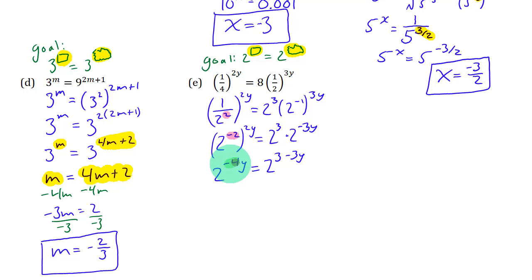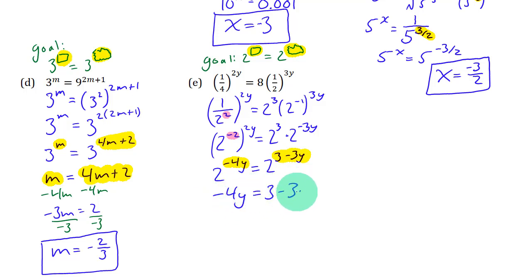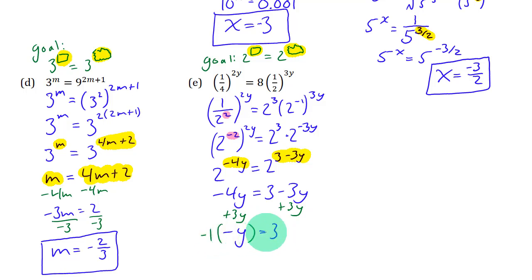Hey look at that — we've got 2 to a power equals 2 to a power. The whole point is to find the value of y that makes this whole thing equal to that whole thing. So we make the exponents equal: negative 4y needs to equal 3 minus 3y. Adding 3y to both sides gives negative y equals 3. Multiply both sides by negative 1, and you get y equals negative 3.